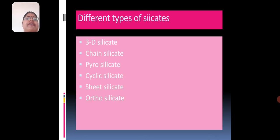There are different types of silicates. The different types of silicates are 3D silicates, chain silicates, pyrosilicates, cyclic silicates, sheet silicates, and orthosilicates. These are different forms of silicates that are made in large polymeric structures and large polymeric molecules.